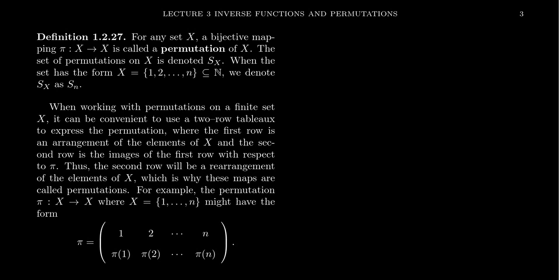For any set X — we probably should say it's a non-empty set — X could be a finite set or an infinite set, not a problem whatsoever. A bijective function of the form pi goes from X to X, so it's a bijective map from a set into itself. We call this a permutation.